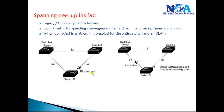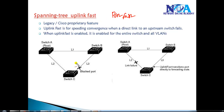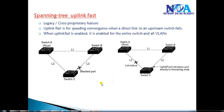In this video we'll talk about spanning tree UplinkFast and BackboneFast features. These are legacy methods no longer commonly used, but Cisco added enhancements to speed up convergence time. One enhancement was PortFast, which is applied on access ports — whichever port has PortFast enabled will bypass the listening and learning stages and transition immediately into forwarding.